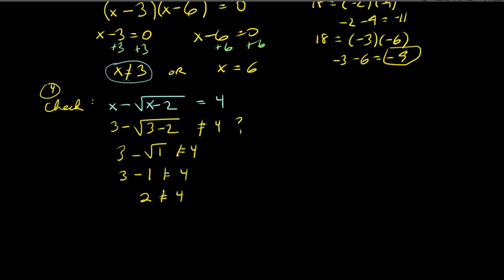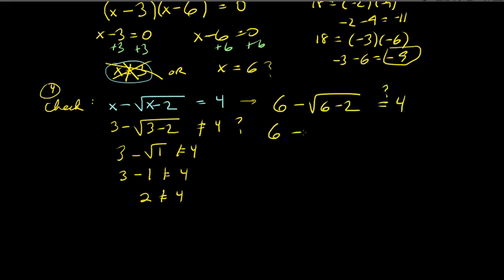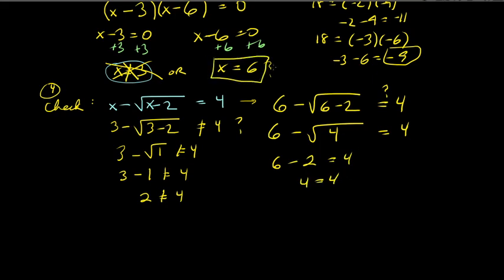Now check x equals 6: we get 6 minus the square root of (6 minus 2), which is 6 minus the square root of 4, equals 6 minus 2, equals 4. And 4 equals 4 — that's correct! So x equals 6 is the valid solution.